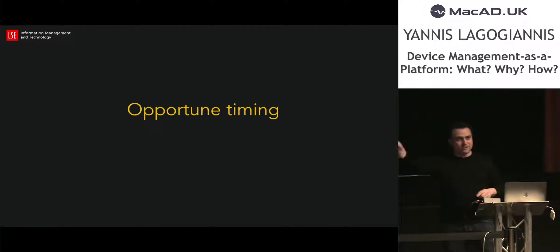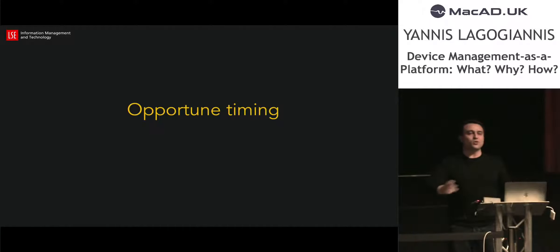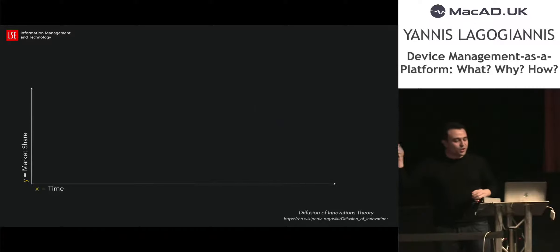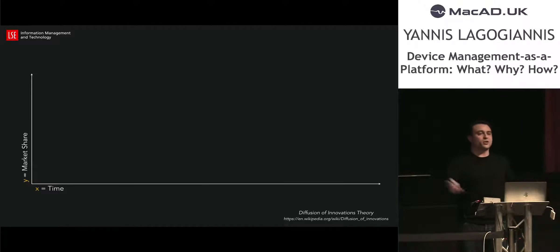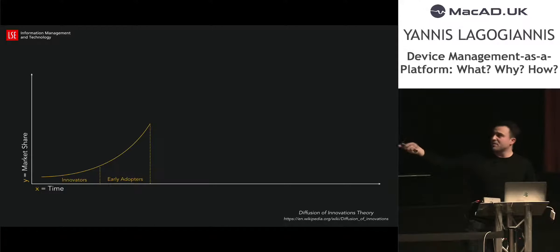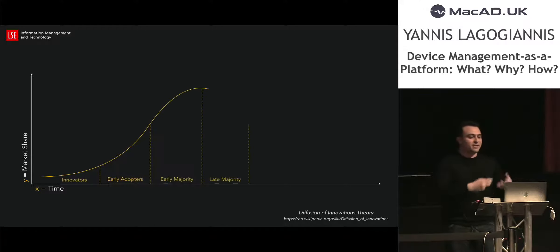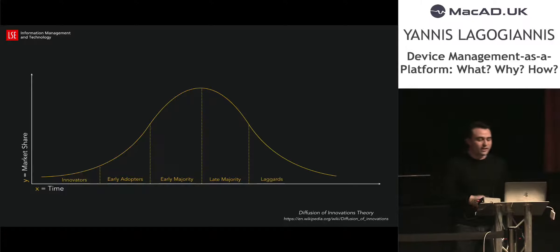Now we're going to get a bit theoretical — stay with me. This is about the way innovations diffuse and ultimately get replaced. Using diffusion of innovations theory: the way a new technology is introduced into the workplace follows a certain process. At the beginning you have innovators and early adopters; eventually it reaches an early majority, then a late majority as the technology gets overtaken by other things, and eventually it fades out.